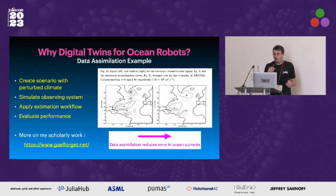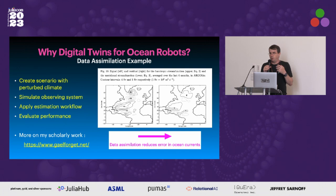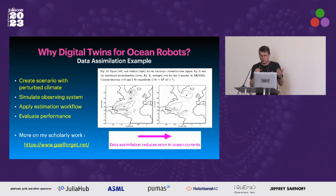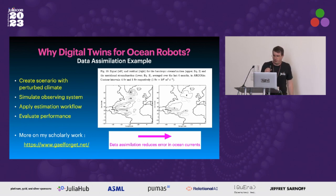One reason I think Julia is great for all this work is that there is a rich ecosystem of very powerful methods — from Bayesian estimation to neural networks to Kalman filtering and so on. This is what we will ultimately leverage.